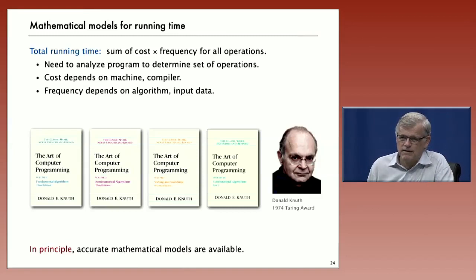We can calculate the total running time of a program by identifying all the basic operations, figuring out the cost, figuring out the frequency of execution and summing up the cost times frequency for all the operations. You have to analyze the program to determine what set of operations and the cost depends on the machine and the computer in the system. The frequency leads us to mathematics because it depends on the algorithm and the input data.